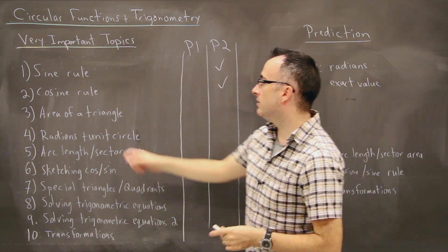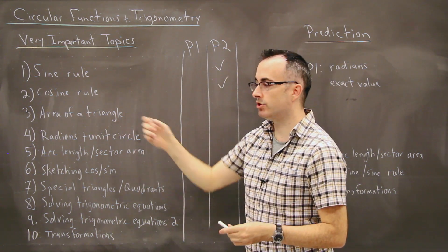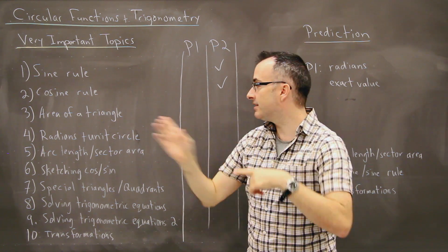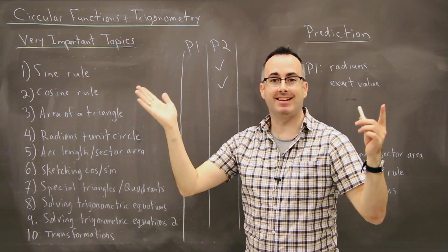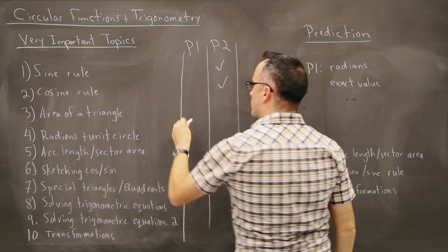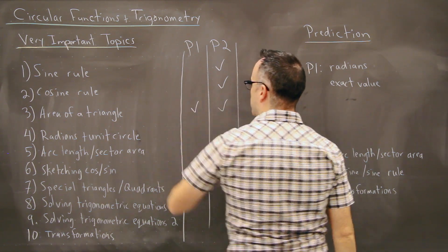The area of a triangle, that's an interesting one, because you're used to doing like half base times height for a right angle. This is what do you do for an area of any type of triangle. They'll show up pretty commonly on both paper one or two.